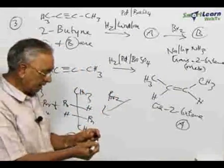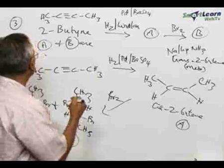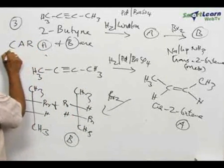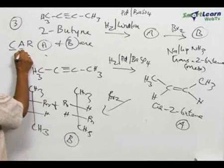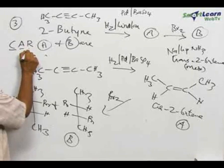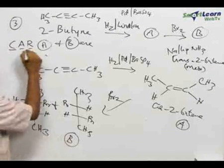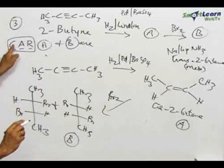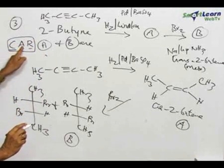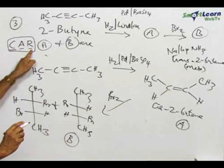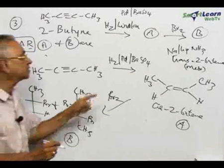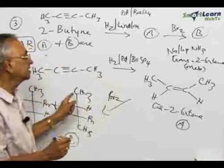Normally, there is an easy way to remember using the mnemonic CAR: cis-olefin is obtained, anti-addition of bromine takes place, and the product obtained is racemic. So this can be used as an easy way to remember in terms of cis-olefin, anti-addition, and then racemic product is being obtained in this case. So the answer for this question is C.